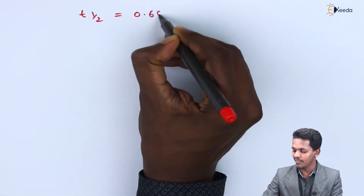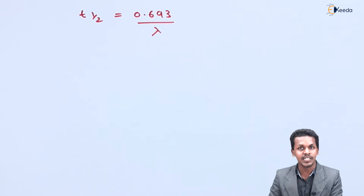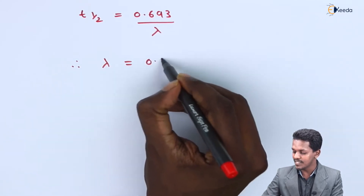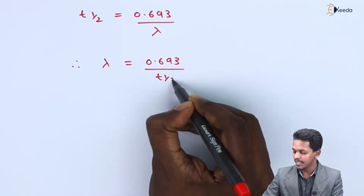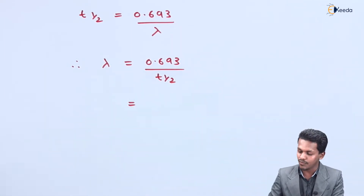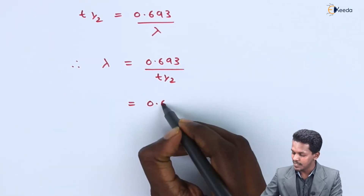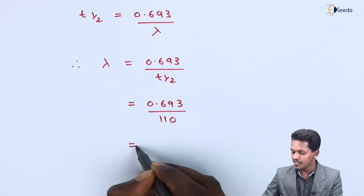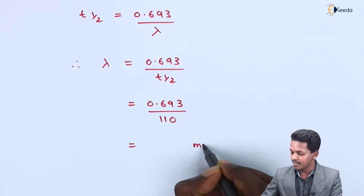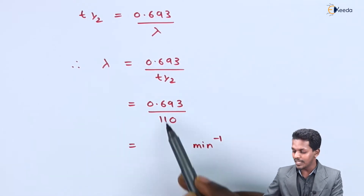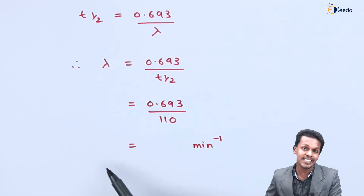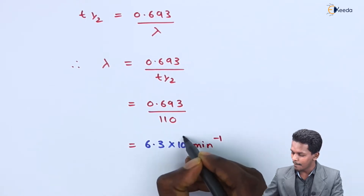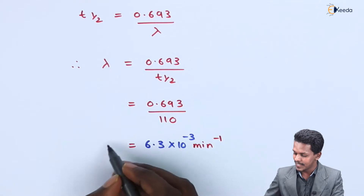The formula is: t½ = 0.693 / λ. Rearranging, λ = 0.693 / t½ = 0.693 / 110 minutes. Calculating this gives the decay constant λ = 6.3 × 10⁻³ minute⁻¹.